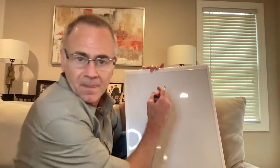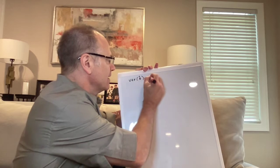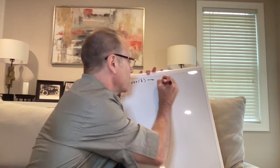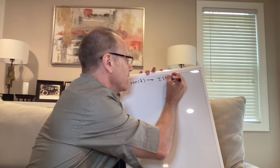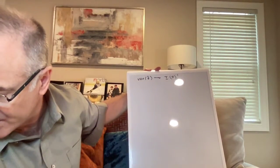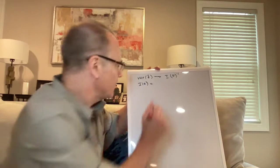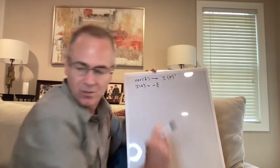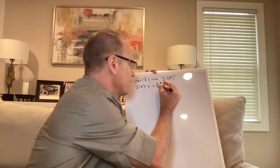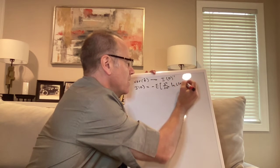Welcome to segment 2.2. Here's where we left off. The variance of theta hat approaches I of theta to the negative 1. In the limit, as you get infinite data, that's what it equals. Remember, I of theta equals the negative of the expected value of the second derivative of log L of theta.